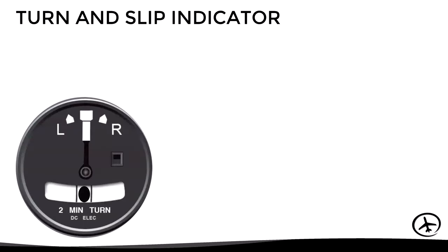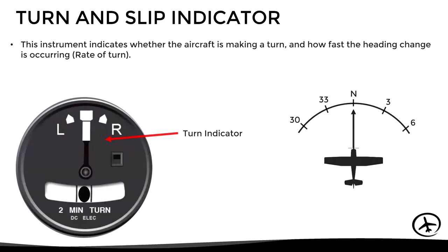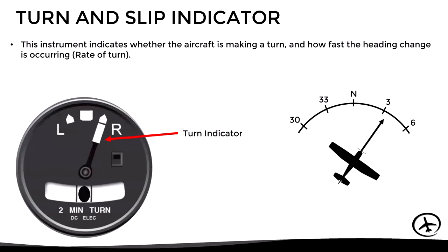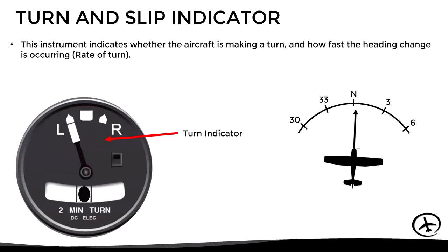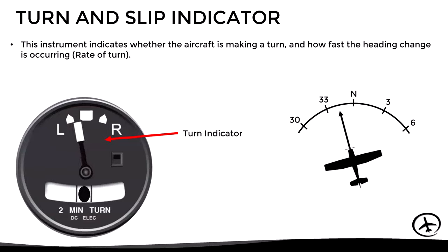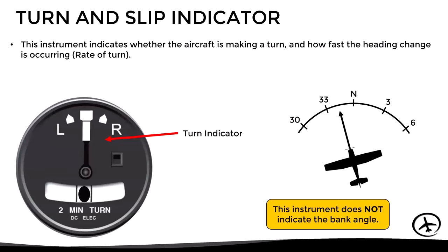Let's first look at the turn and slip indicator. This instrument indicates whether the aircraft is making a turn and how fast the heading change is occurring, which is the rate of turn. Importantly, this instrument does not indicate the bank angle of the aircraft — it only shows the direction of the turn and the rate of turn.